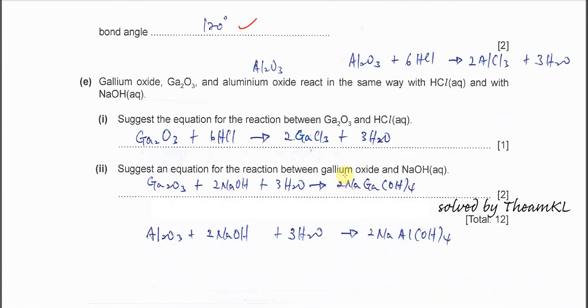For part E, gallium oxide and aluminium oxide react in the same way with HCl. So this one we need to recall what you learned in aluminium oxide with HCl. So you get AlCl3 and 3H2O. So you just need to replace the Al with the Ga. So you get this equation.